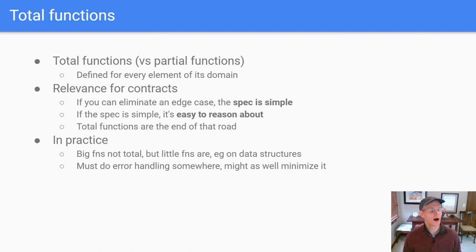But in practice, what I find is that when you've got big methods or big functions, they tend not to be total. But a lot of times it's quite possible, if you're thinking about it in advance, to make the little functions, for example, the things on your data structures, to make those things total. And that's incredibly convenient, again. So getting back at, you define some data structure, you define a bunch of little operations on the data structure, methods on the data structure, you can write one-liner contracts for them because they're total. And it just becomes super easy to say, this is exactly what it does.